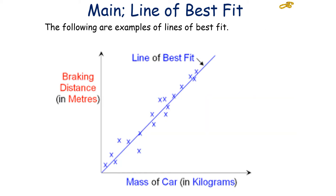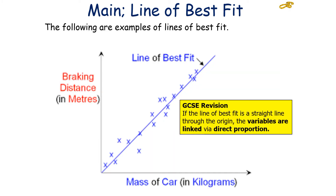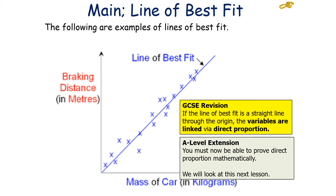These are all examples of lines of best fit. Remember from GCSE: if the line of best fit is a straight line through the origin, we can say the two variables are linked via direct proportion. So in this example, the mass of the car and the braking distance are directly proportional — because the line of best fit is a straight line through the origin. For A-level, you also need to be able to prove direct proportion mathematically, not just state it from a line of best fit, which we'll look at in the next lesson.